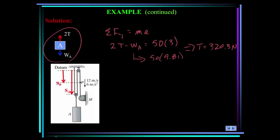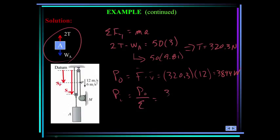Now the power supplied by the motor is the product of the force applied to the cable and the velocity of the cable. So that power is force times velocity. They're in the same direction. So it's the tension, 320.3 N, times the velocity, which is given as 12 meters per second. So this is 3844 watts. Now the power supplied to the motor is determined using the motor's efficiency. So the power into the motor is equal to the power out divided by the efficiency. So the power in is the power out, 3844, divided by the efficiency, which is given as 0.8. So the motor power required is 4.8 kilowatt.